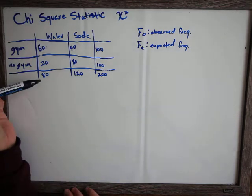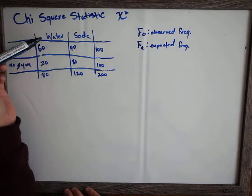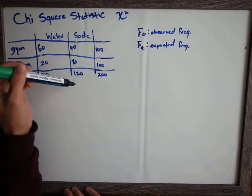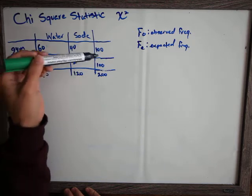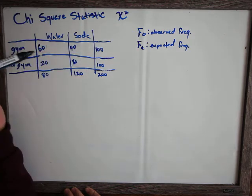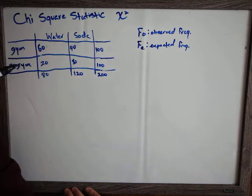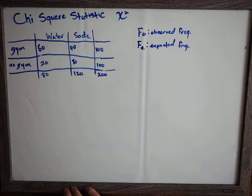We have our totals for each column at the bottom — the column marginals — and we have our row marginals, which are the totals for the people who go to the gym and the people who don't go to the gym.